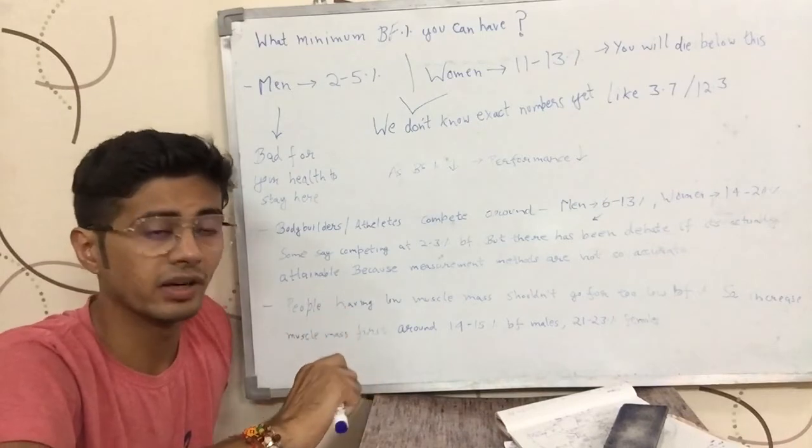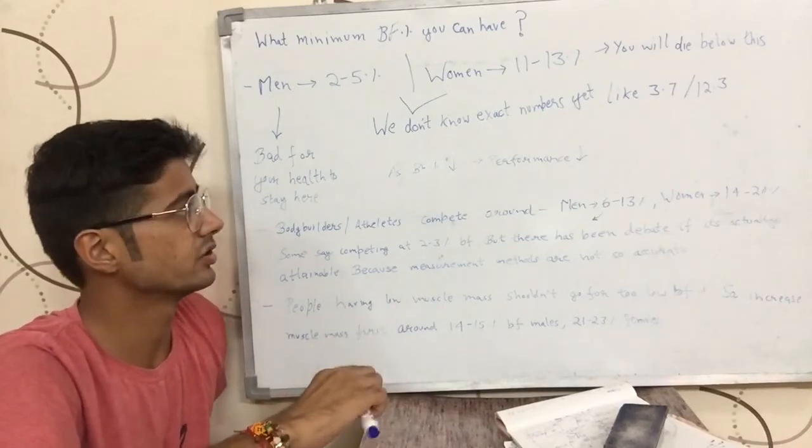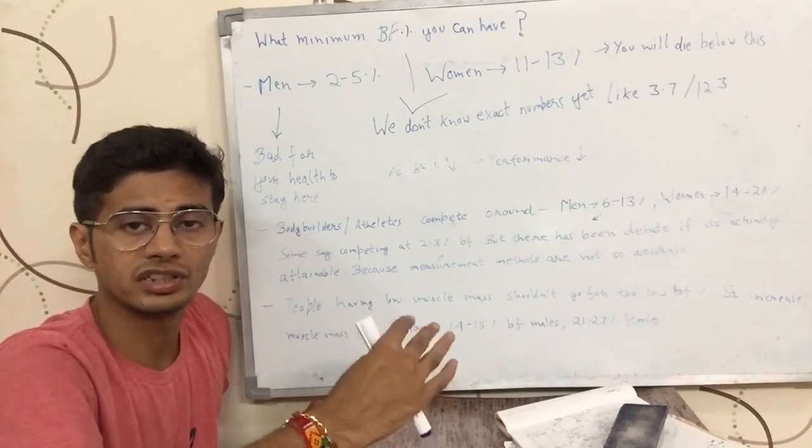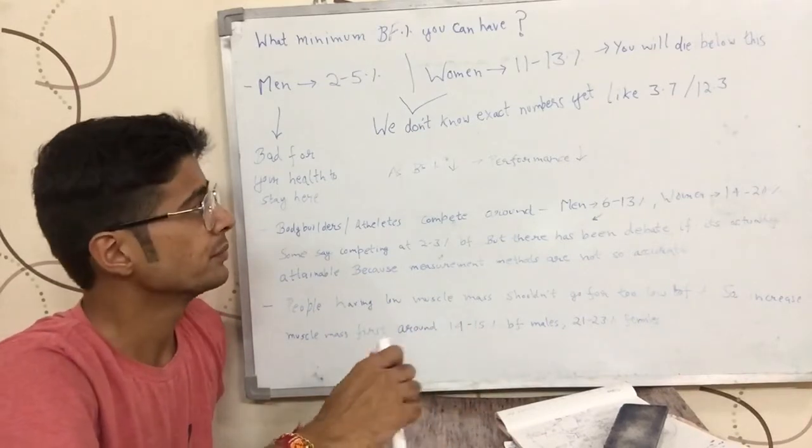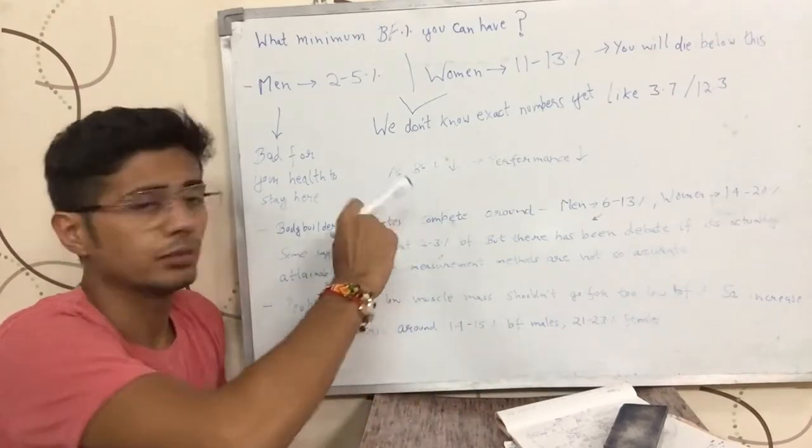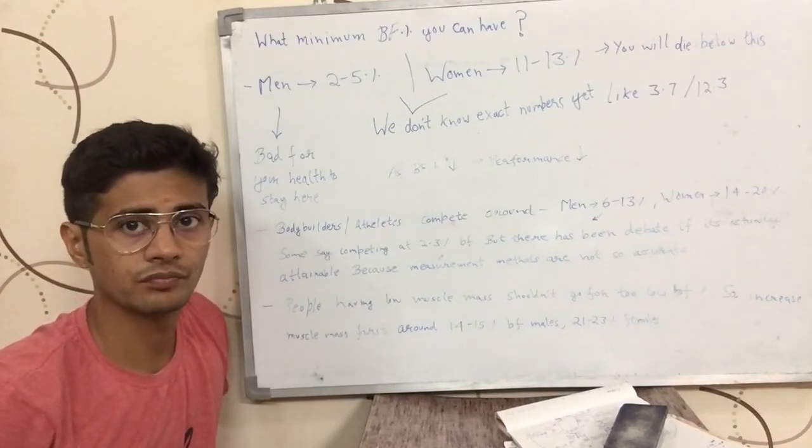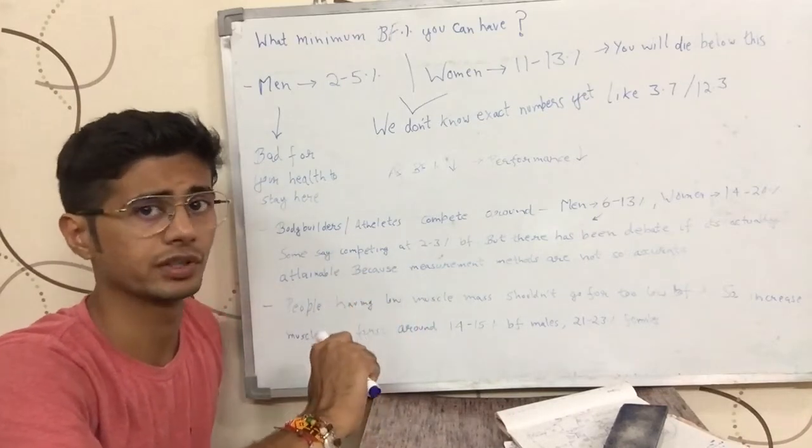If you're a runner, you might not run as fast as you could at a higher body fat percentage. You might not run as fast on 6% as you were running on 12% or 13%. I'm talking about males. For females, they can add 7-8% to the male body fat percentage to get their respective numbers. I've talked about this in my previous video.